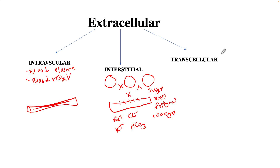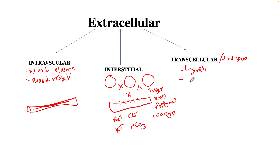Transcellular fluid — also known as the third space — consists of minerals and solvents found in body compartments such as the lymph nodes, cerebrospinal fluid, the GI lumen, and the intraocular space.